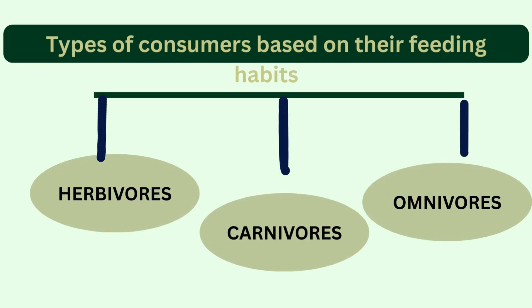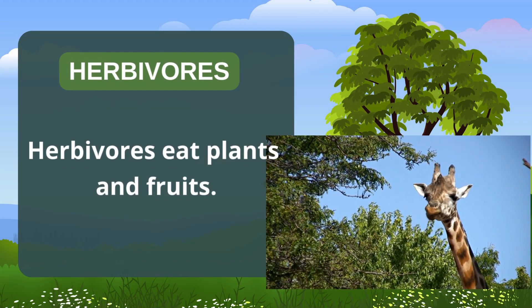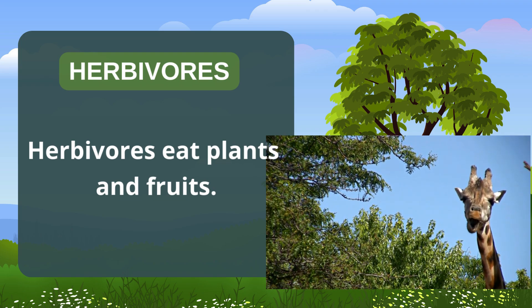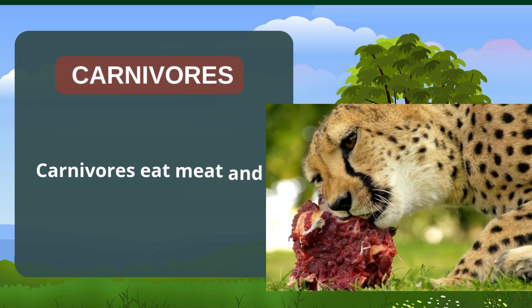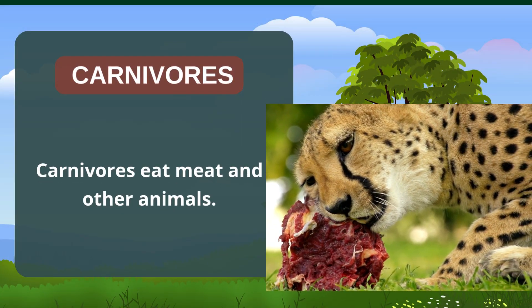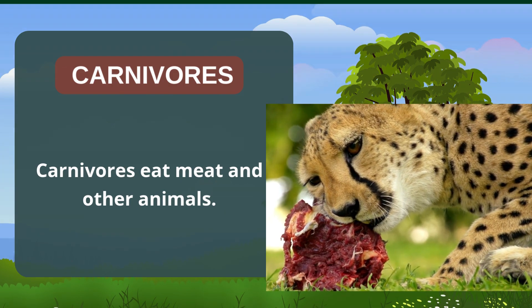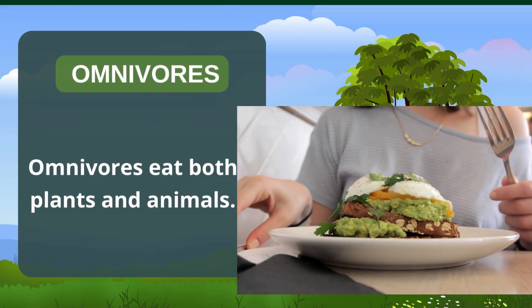Types of consumers based on their feeding habits are herbivores, carnivores, and omnivores. Herbivores eat plants and fruits — for example, giraffe, zebra, cow, goat, and rabbits. Carnivores eat meat and other animals — for example, lion, cheetah, shark, eagle, and snake. Omnivores eat both plants and animals — like humans, rats, crows, and ants.